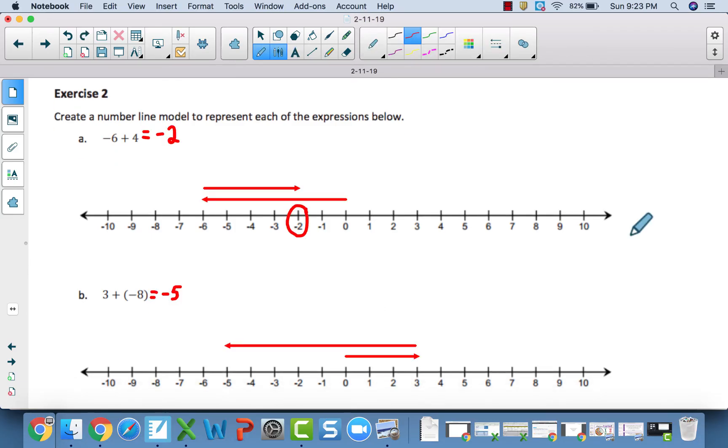So, for exercise number two, A should be negative two, B should be negative five. You can see the two number line arrow diagrams that represent the addition sentence, and with the answers circled.